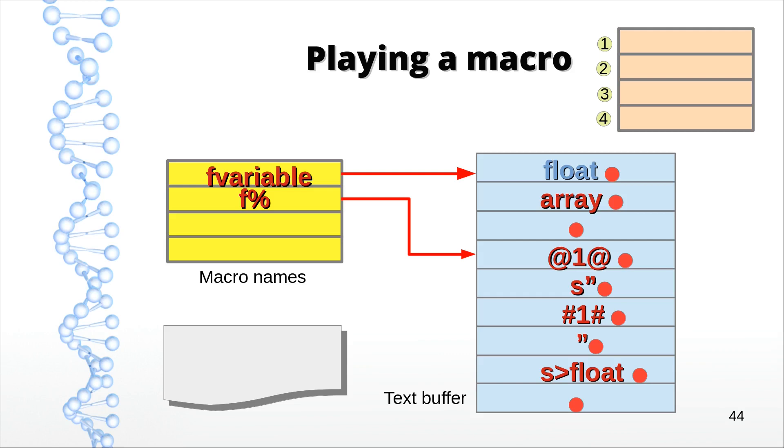Introducing fetch1fetch. It parses the next token and stores it in register1. Then it continues as normal. hash1hash is another one, which writes the contents of register1 to the output file, and then continues. And that's the way we can handle macros like f%.